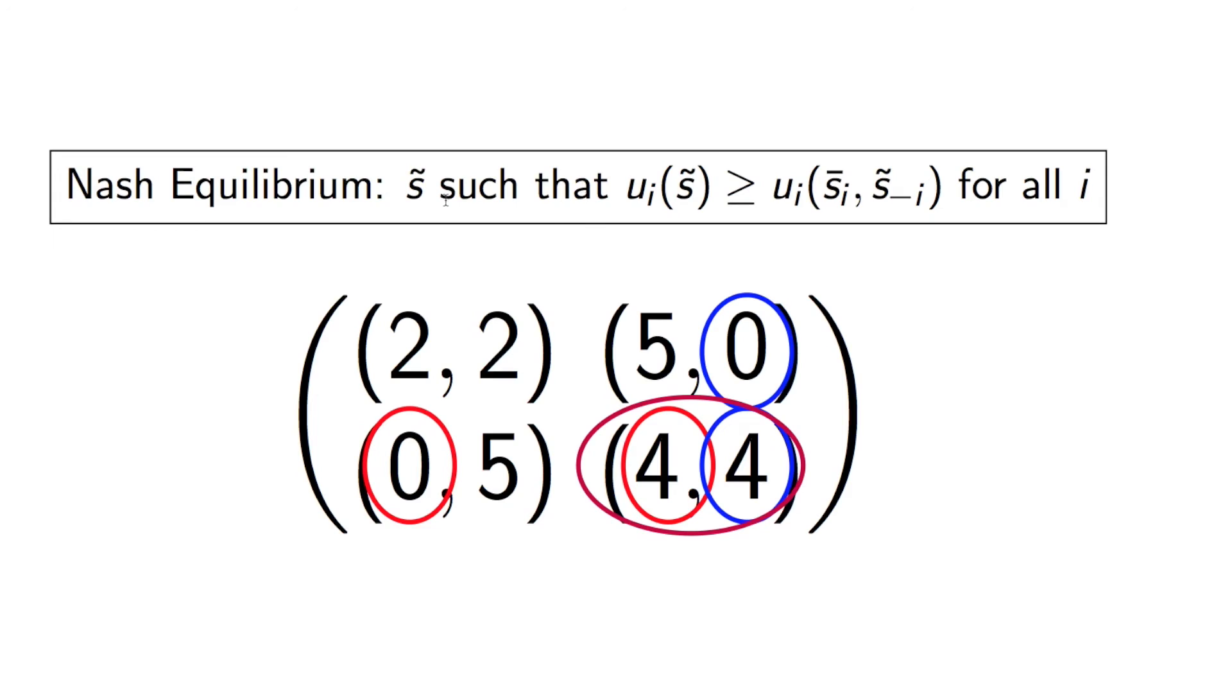Here's the formal definition of a Nash equilibrium in shorthand. So it's some strategy profile, S tilde, such that the utility at S tilde is bigger or equal to the utility at any other S bar for all players against every other strategy profile. And here's a photo of Russell Crowe.